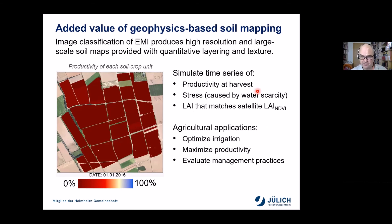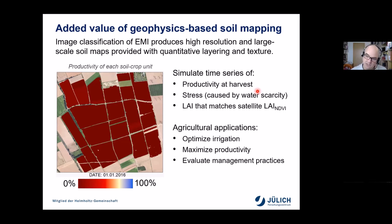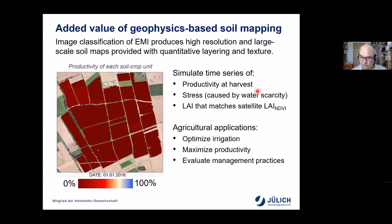In summary, this work showed there was a real added value of geophysics-based soil maps at the one-kilometer scale. Image classification of EMI data produced high-resolution, large-scale soil maps, and we developed a workflow to provide these maps with quantitative layer and textural information. This allowed us to simulate time series of productivity and water stress during the growing season, resulting in LAI estimates that matched well with independent satellite observations. I hope you can imagine interesting applications for such a spatial modeling system — for example, optimizing irrigation, maximizing productivity by changing field arrangements, and evaluating management practices in general.